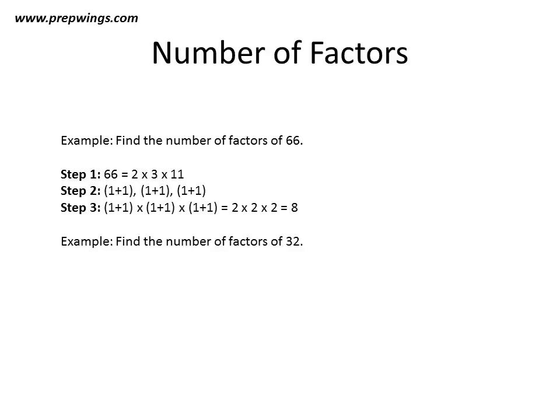In this final example, we find the number of factors of 32. The prime factorization of 32 is 2 raised to power 5. We only have one prime number — 2. So we add 1 to its power: 5+1. There is no other number to multiply with, so it becomes 6. Thus, 32 has 6 factors.